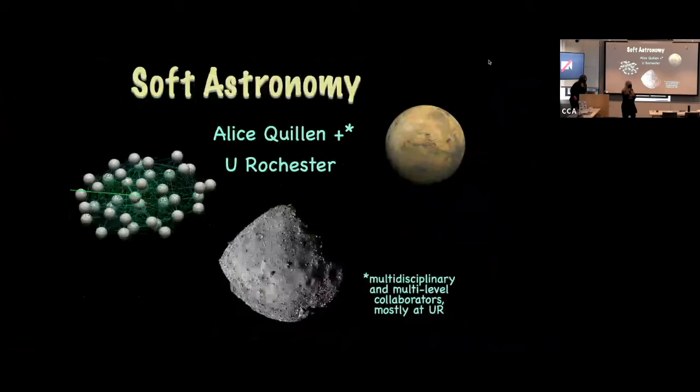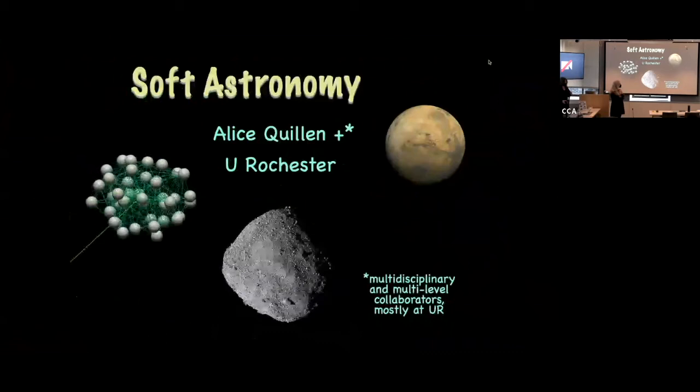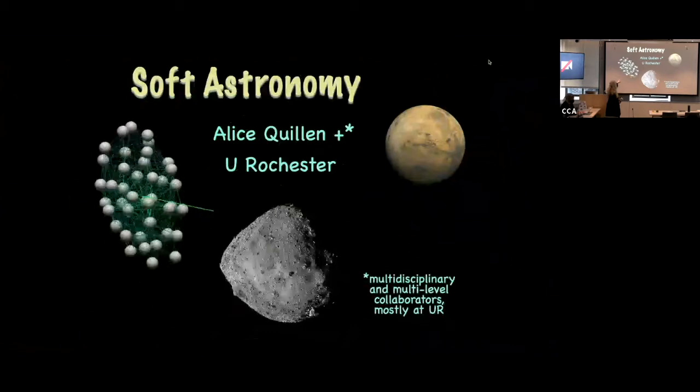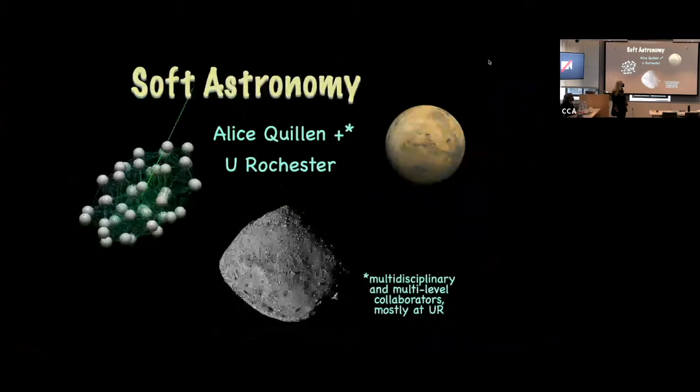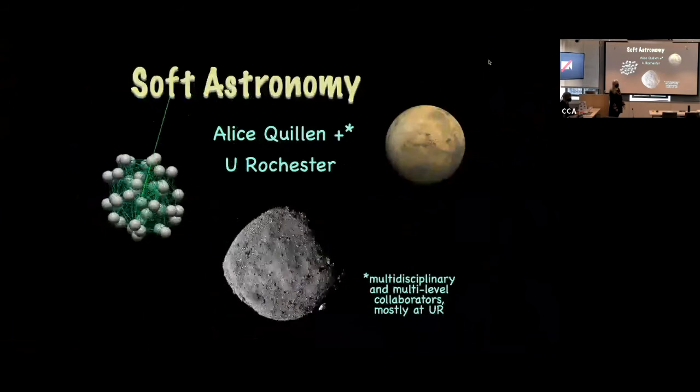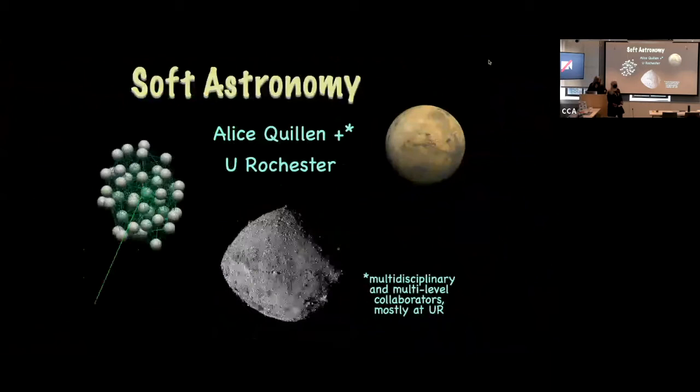I'm going to talk about soft astronomy — puns intended, not hardcore. I have some pictures here of things you might think of as soft. This one is a mass-spring model, an n-body simulation with springs. It's not a round body, and it's under a tidal field in an eccentric orbit around a planet, so it tumbles. This is a situation with non-principal axis rotation.